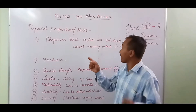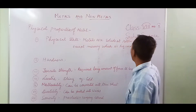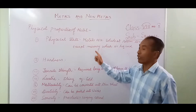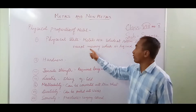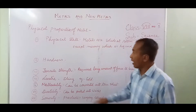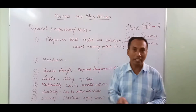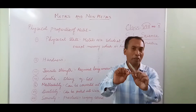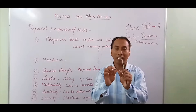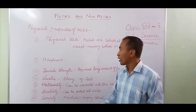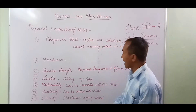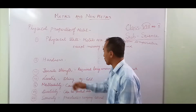The first physical property is that all metals are solid at room temperature, except for mercury — mercury is the only metal that is liquid at room temperature. Second is hardness: all metals are very hard; you cannot break them with your hand, it requires a large amount of force.